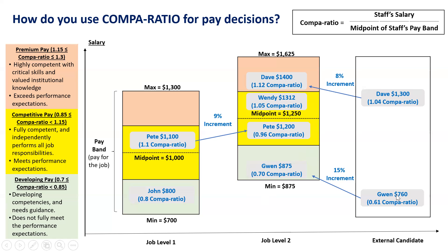Next, Gwen is another external candidate I want to hire at job level two. In terms of internal equity, Gwen's skills and experience is higher than John's but lower than Pete's. However, Gwen's current salary is far below the minimum of the pay band for job level two, which is $875. So I will offer her a salary of $875 to bring her to the minimum salary for this job level. Even though her current salary is $760 and a 10% increase might have been standard, I want to pay her to the pay band minimum of $875.